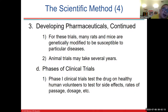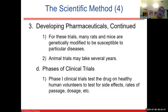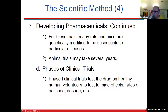Animal trials can take several years, especially if you're looking for survivorship. Mice live two or three years, so you have to wait until they all die to see if the treatment changes their natural lifespan.